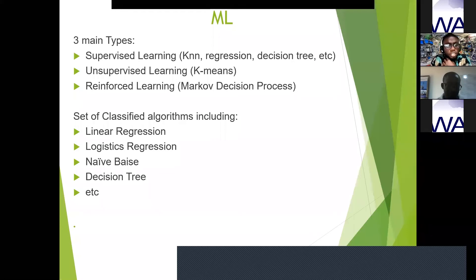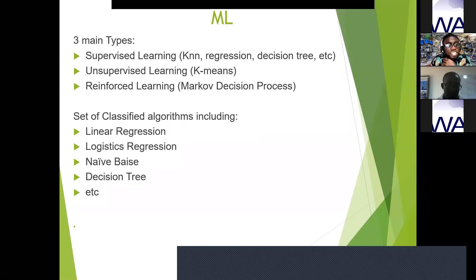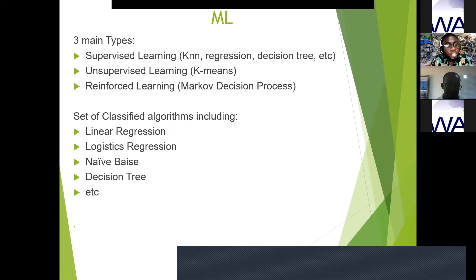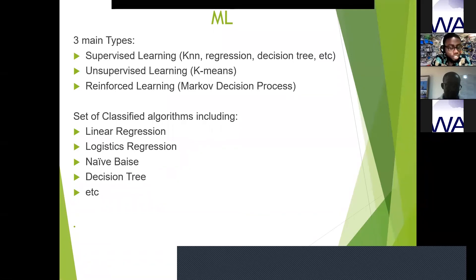Common machine learning algorithms include: linear regression, which works with continuous data; logistic regression, for classification data; naive Bayes; and decision trees, which work in a yes/no branching manner — for example: are you a boy? Yes. What is your age? If this age, what can you do? That's how a decision tree works.